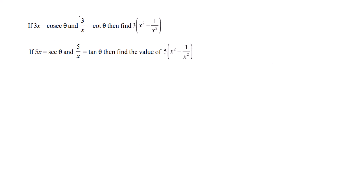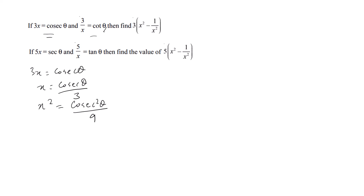Next question: if 3x = cos²θ and 3/x = cosθ, find 3(x² - 1/x²). From the first expression, 3x = cos²θ, so x = cos²θ/3, and therefore x² = cos⁴θ/9.